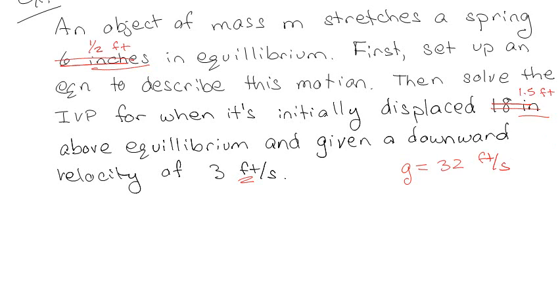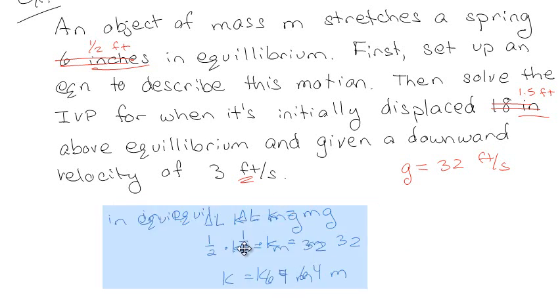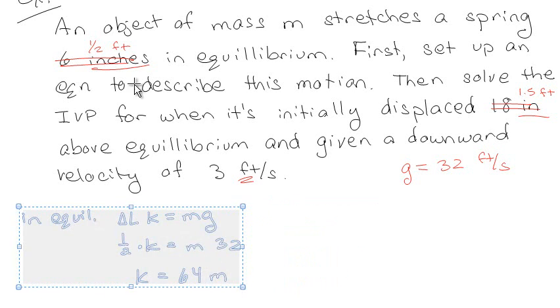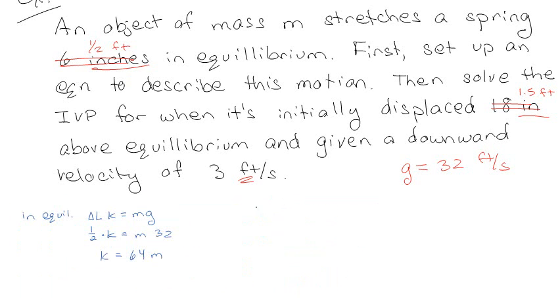Now it doesn't give us the k value of the spring, but we can calculate that, because we know that in equilibrium delta L times k is equal to mass times gravity. So delta L is 1 half of a foot, m we don't know, but g we know is 32. So we can say that k is 64 times m, which is good.